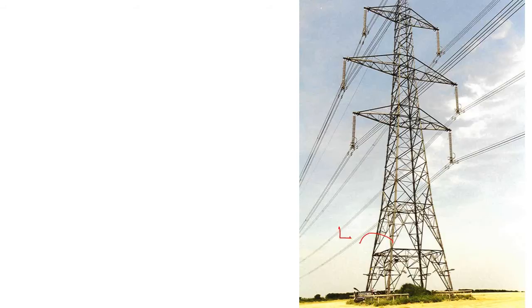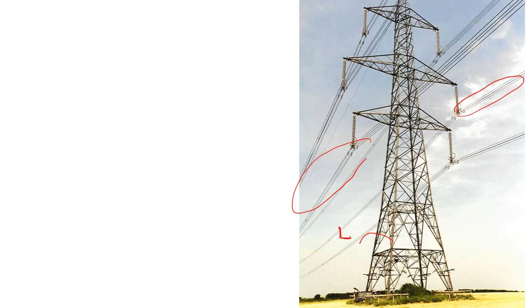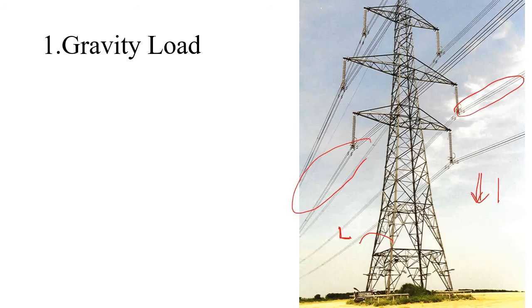In real life these are normally steel angles. Now, what are the forces actually coming to this structure? To design any particular structure, whether complex or simple, you first have to know what loads are coming to it. The very first load is the self-weight of the structure itself, and also the load due to the electrical lines — these are known as gravity loads.